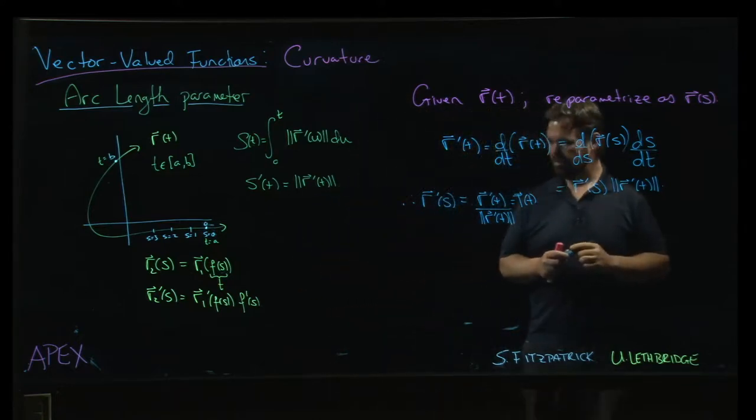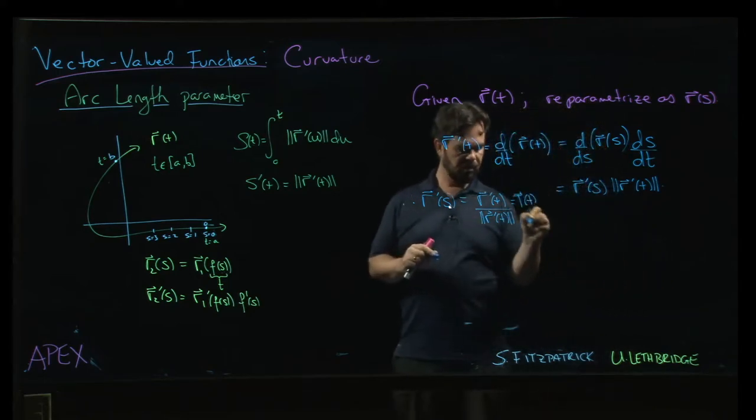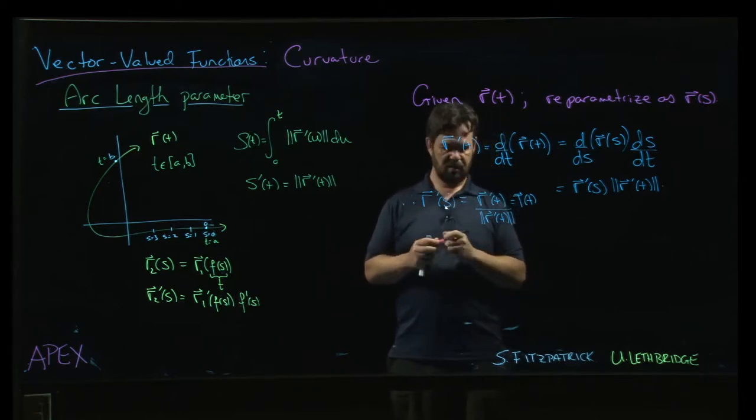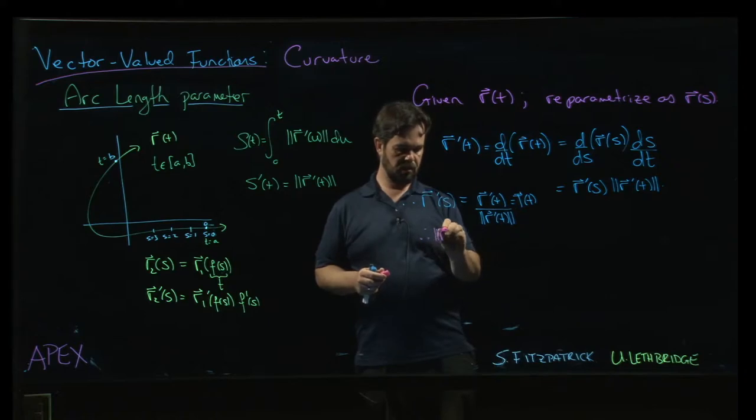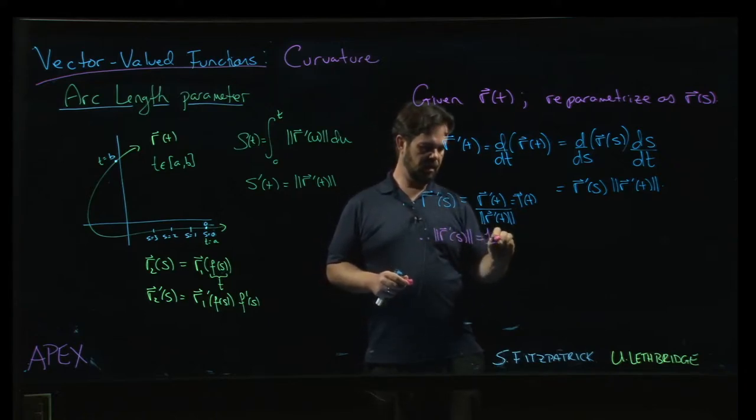But in the end, I guess the upshot of this is because we know that this is a unit vector by definition, what that tells me is that the magnitude of R prime is equal to 1.